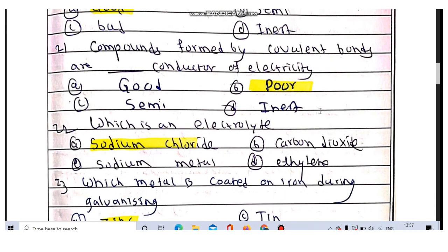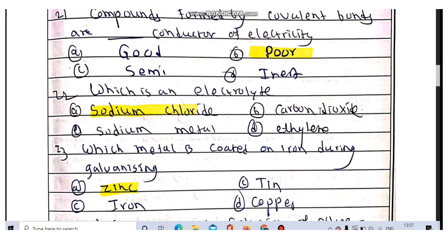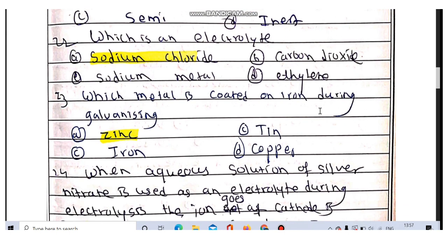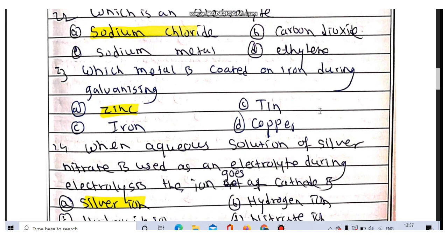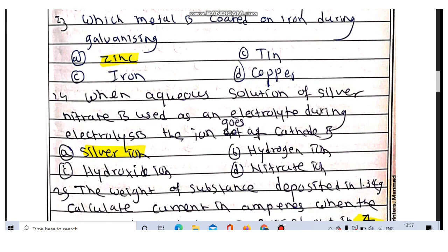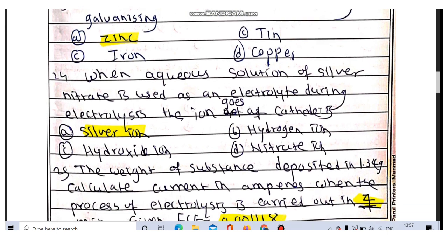Which is an electrolyte out of these four? Sodium chloride is an electrolyte. Which metal is coated on iron during galvanizing? Zinc is coated on iron. When aqueous solution of silver nitrate is used as an electrolyte during electrolysis, the ion goes to cathode. It is a silver ion.